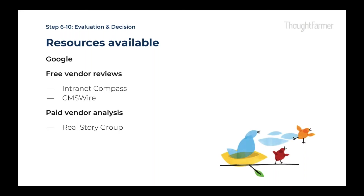Here are some resources that might help you along that journey. First, Google — ask a question about intranets and you'll get great responses. Second, free vendor reviews: Intranet Compass is an example, and CMS Wire, which has not only good vendor recommendations but great articles around current trends in the space. Third, paid vendor analysis such as Real Story Group, which does in-depth reviews on vendors — but be careful, as some paid analysis can be pay-to-play. Quora is also really good — many organizations post questions there and get useful feedback.